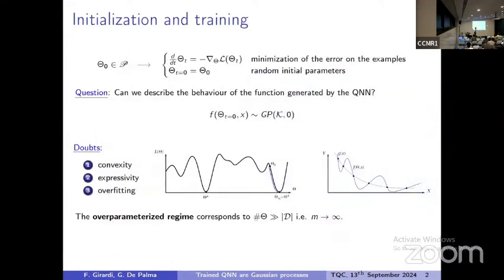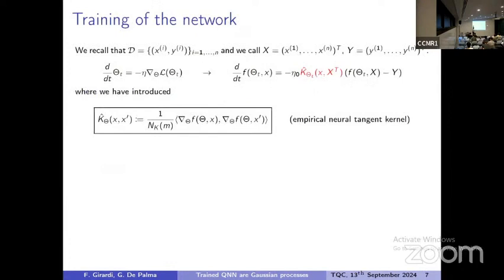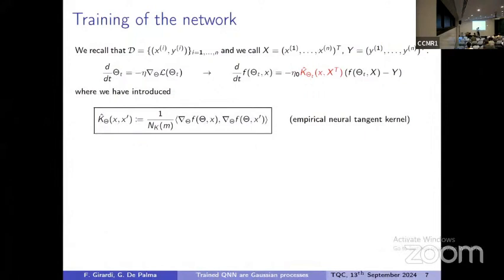What can we say about the training and the potential problems we identified? A necessary step is to understand what the evolution equation for the parameters means in terms of the model itself. Using the chain rule, we can translate this equation into a differential equation for the function. The protagonist of this evolution is a bivariate function called the empirical neural tangent kernel. This makes the analytical solution very hard because there is a time dependence — if the kernel were constant, the equation would be easy to solve, but it is not.